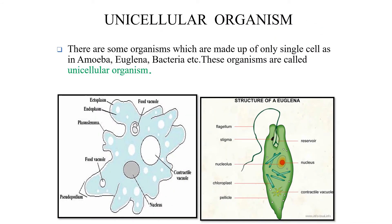Unicellular organism. 'Uni' refers to single, so a single cell is present in some organisms — not only animals but also plants. There are some organisms which are made up of only a single cell, such as amoeba, euglena, and bacteria. These organisms are called unicellular organisms.